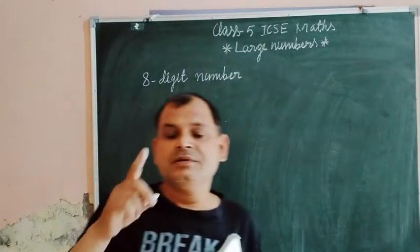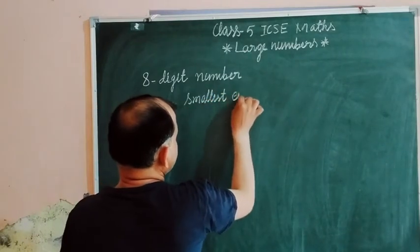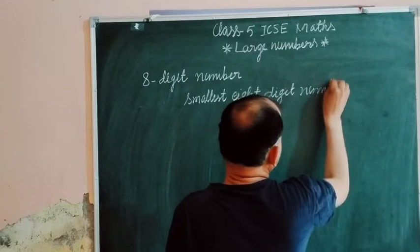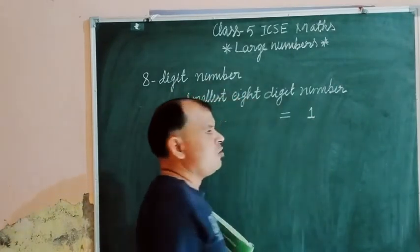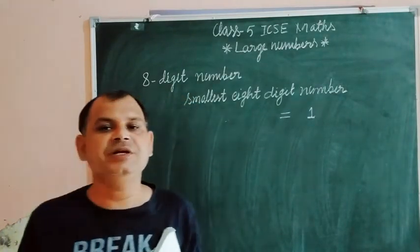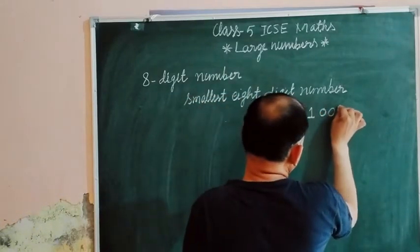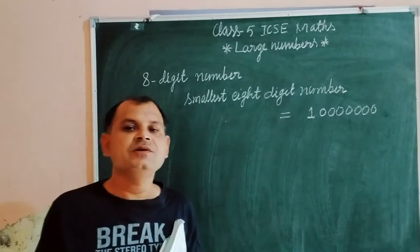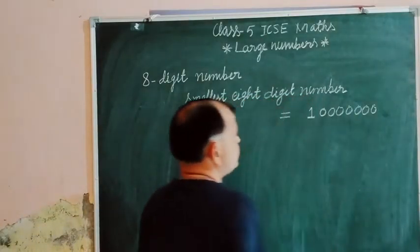First we make the smallest 8-digit number. How to make the smallest 8-digit number? First write 1. Now if you are making an 8-digit number then you should put seven zeros — that is 8 minus 1 — behind the 1. So: 1, 2, 3, 4, 5, 6, 7 — this is the smallest 8-digit number.